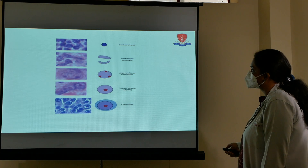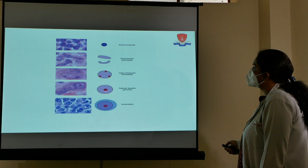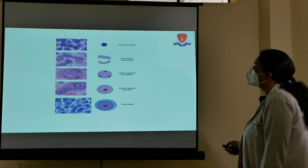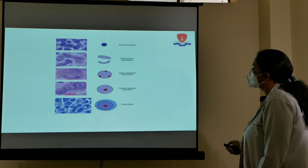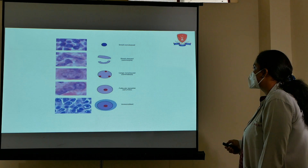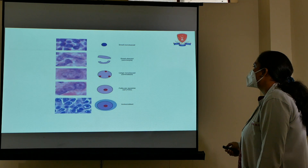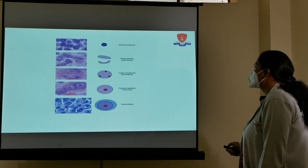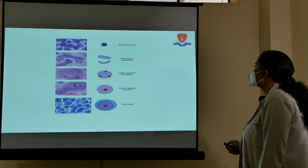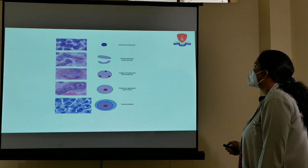Other cells present in lymph nodes are the follicular dendritic cells. These cells are present in the lymph nodes and maintain the follicular germinal centers. They are also large in size with eosinophilic nucleoli. From the immunoblast develop the large non-cleaved cells called centroblasts.